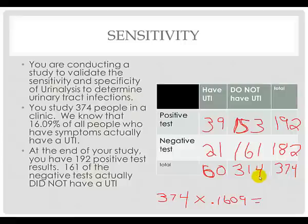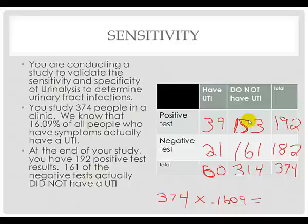This is how we start to identify the calculations for sensitivity and specificity — we have to know, out of all the people who have or don't have disease, what their test results would be, usually identified through deduction. Now, 153 seems like a lot — these people are usually called a false positive test result. These people were told they have a UTI, but they really didn't. The 21 people were told they did not have a UTI when in fact they did — those are false negatives. The opposite corners represent our true positives and true negatives.